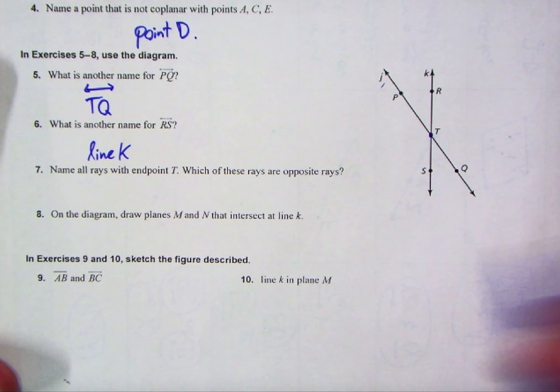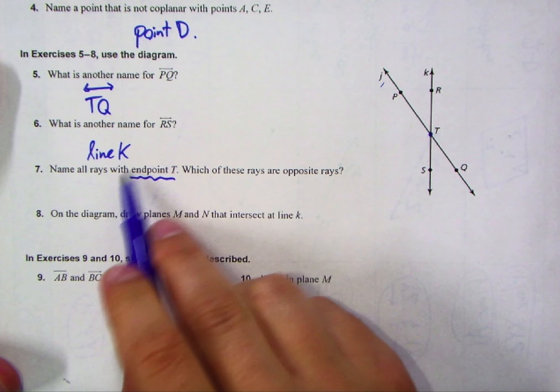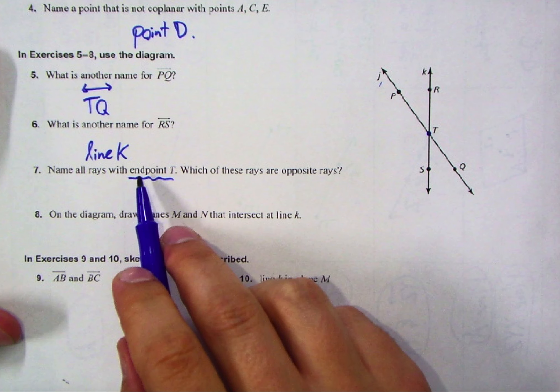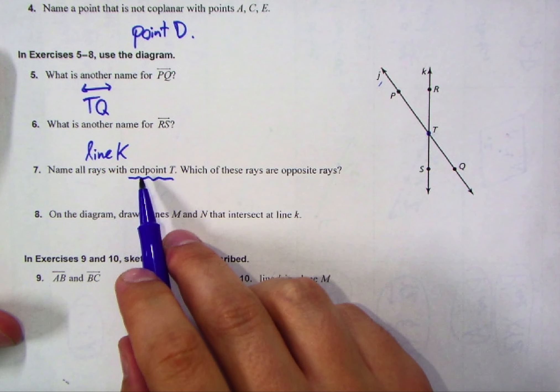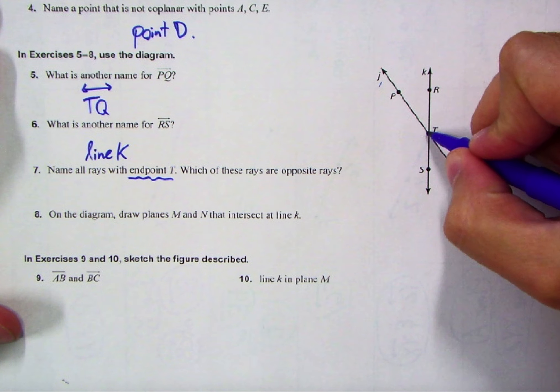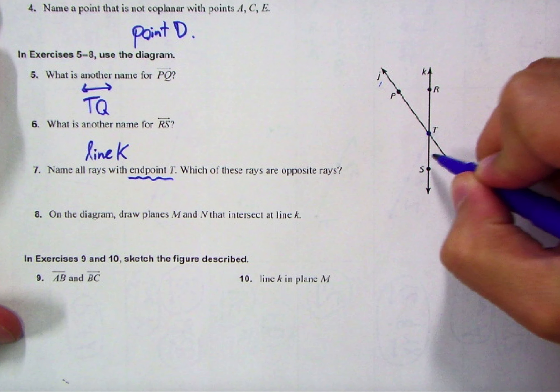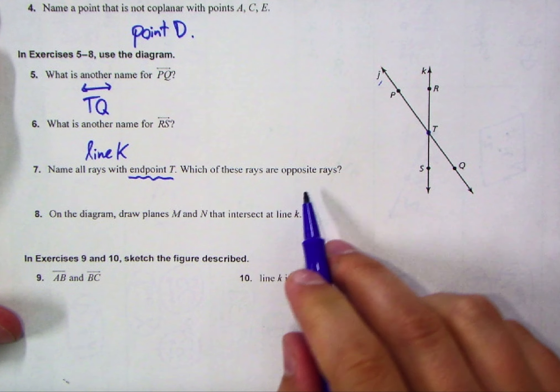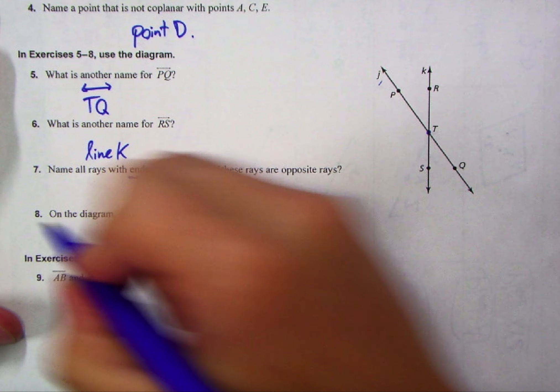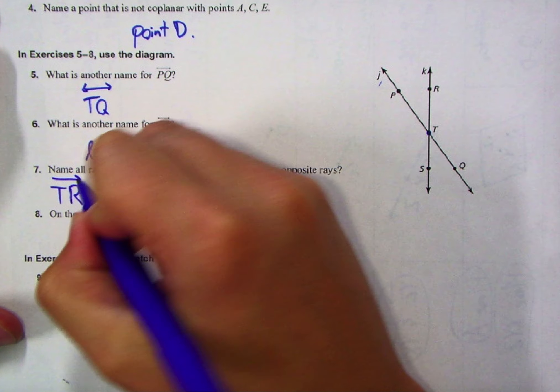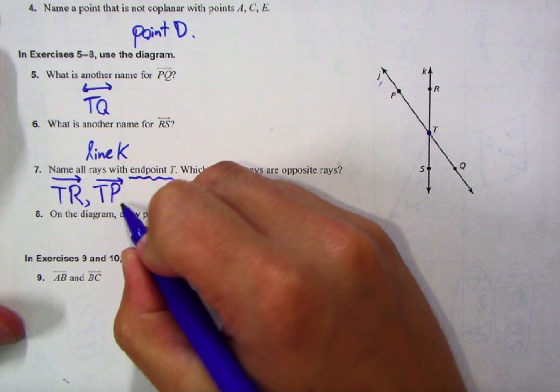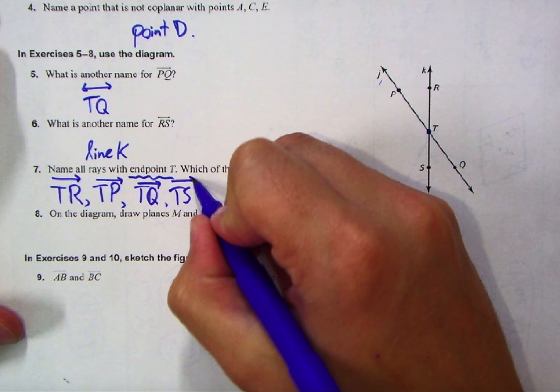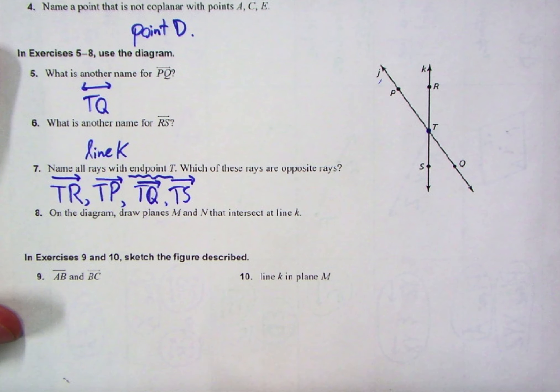Number seven, name all rays with endpoint T. Now, even though this looks like it has to stop there because it's an end, a lot of my students actually think it's easier to think of this like a beginning point. So you're starting at T and moving in other directions. So from T, you'll notice we can continue up, up and left, down, or down and right. So which of these rays are opposite rays? We'll answer here in a second. Let's first off name all four of those. We're going to have ray TR, ray TP, ray TQ, and finally ray TS. So those are our four rays with endpoint T.